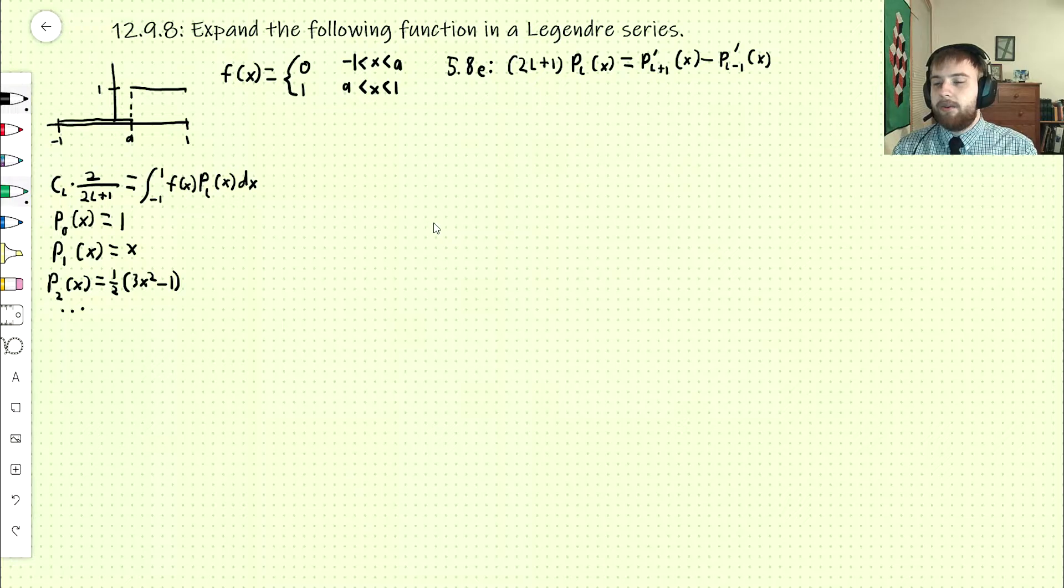So we're going to find the first coefficient by hand, and then we're going to do a trick for the rest of them. This is our formula here that shows us how to find our coefficients for the Legendre series. It's similar to a Fourier series in the sense that you find a coefficient for each cosine or sine wave in that case.